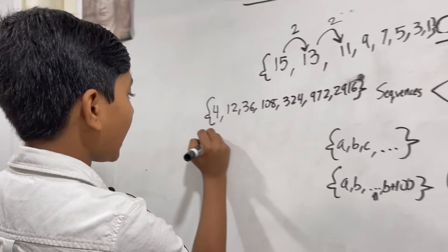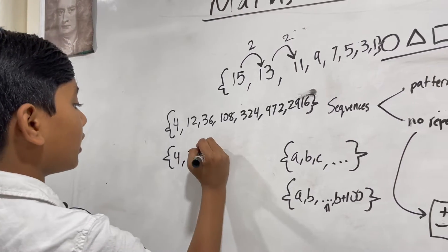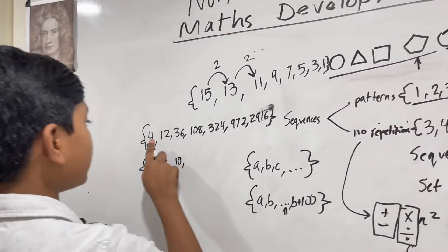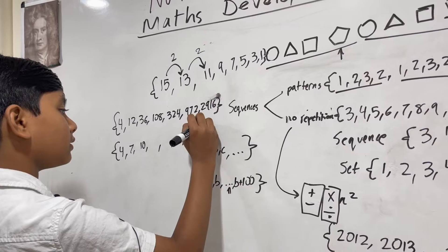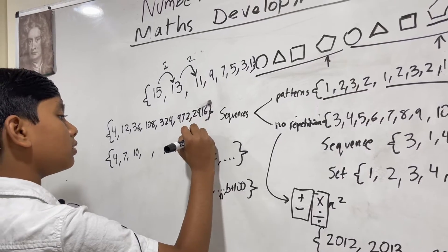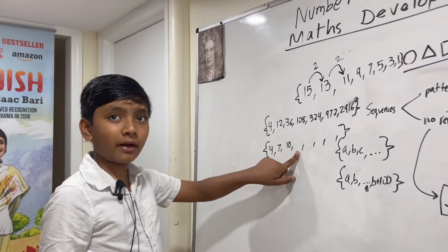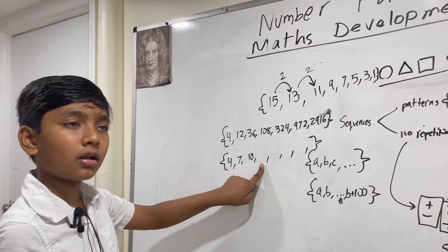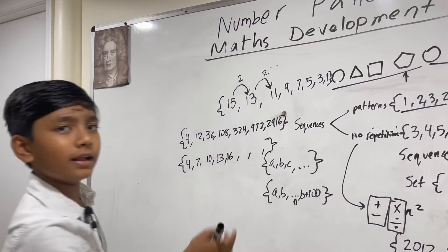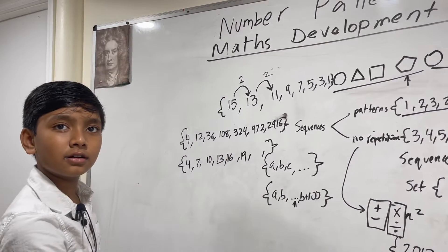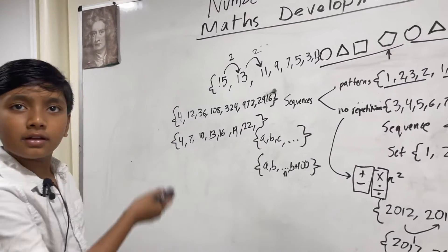However, if we had the same start and just added 3, what would we get? 7, 10, and I'm sure you could fill out the rest of this. Could you tell me what these terms would be? 13, 16, 19, 22, 25.